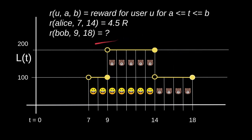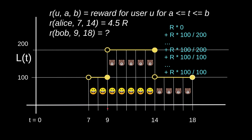How about Bob? At T equals 9, Bob has 0 tokens staked, so we start with R times 0. At T equals 10, he has 100 tokens staked out of a total of 200, so his reward is R times 100 divided by 200. This continues until T equals 14, when Alice unstakes. Starting from T equals 15, Bob receives R times 100 over 100. This continues until T equals 18. That works out to 5 times 0.5R — the 5 seconds where Bob receives half the reward — plus 4 times R for the 4 seconds where he receives the full amount, totaling 6.5R.